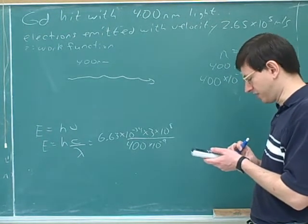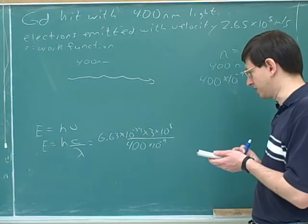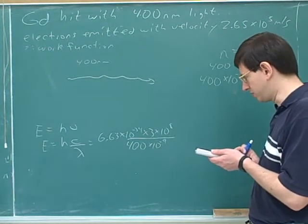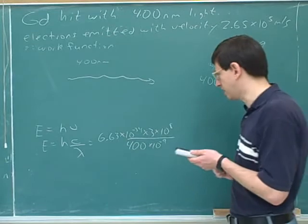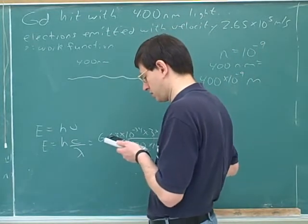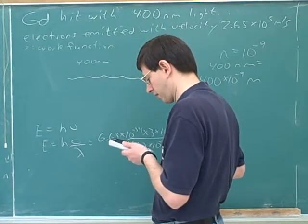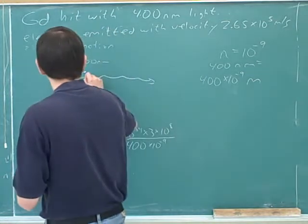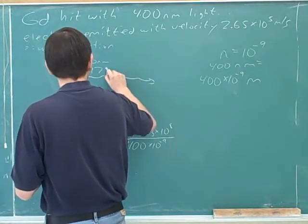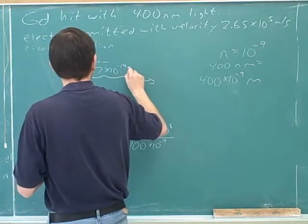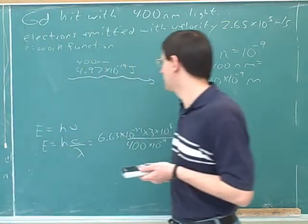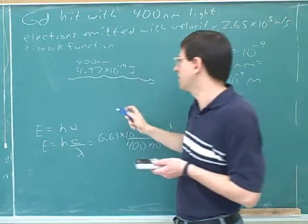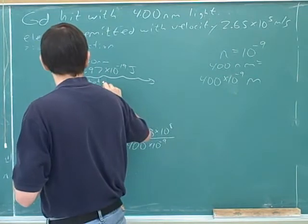On the other hand, if you're getting confused about a unit conversion, it's always best just to go back to the basics of writing out the full unit conversion. OK. So what did you guys get for the energy? 4.97 times 10 to the negative 19. That'll be in joules because that's energy. So that's the original incoming photon.